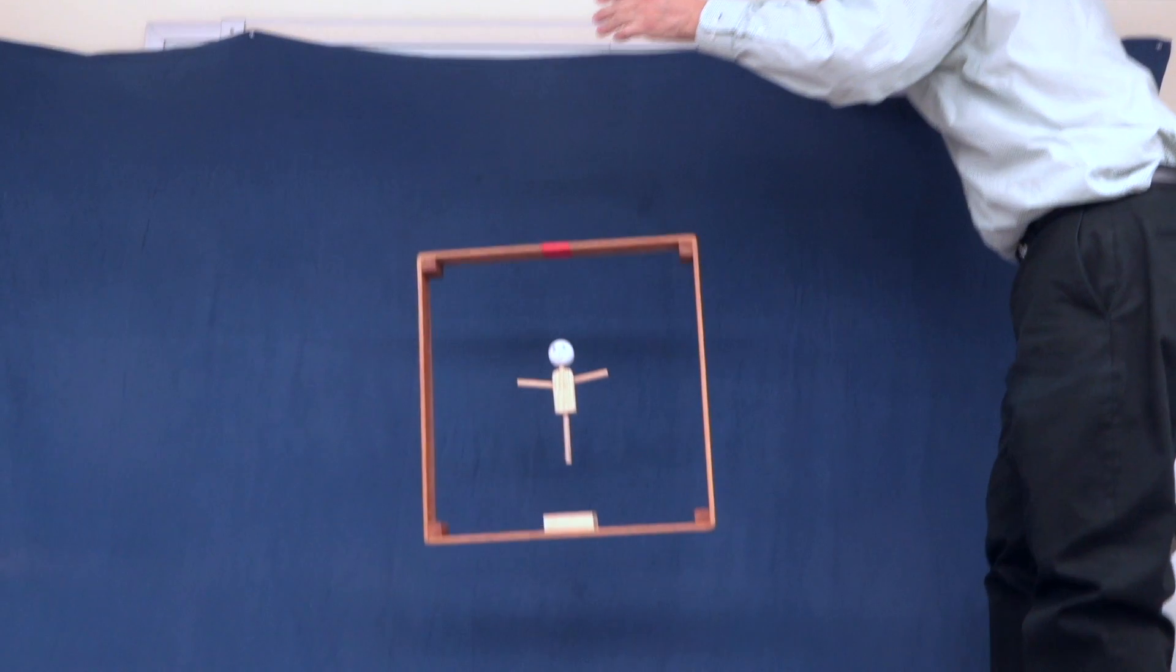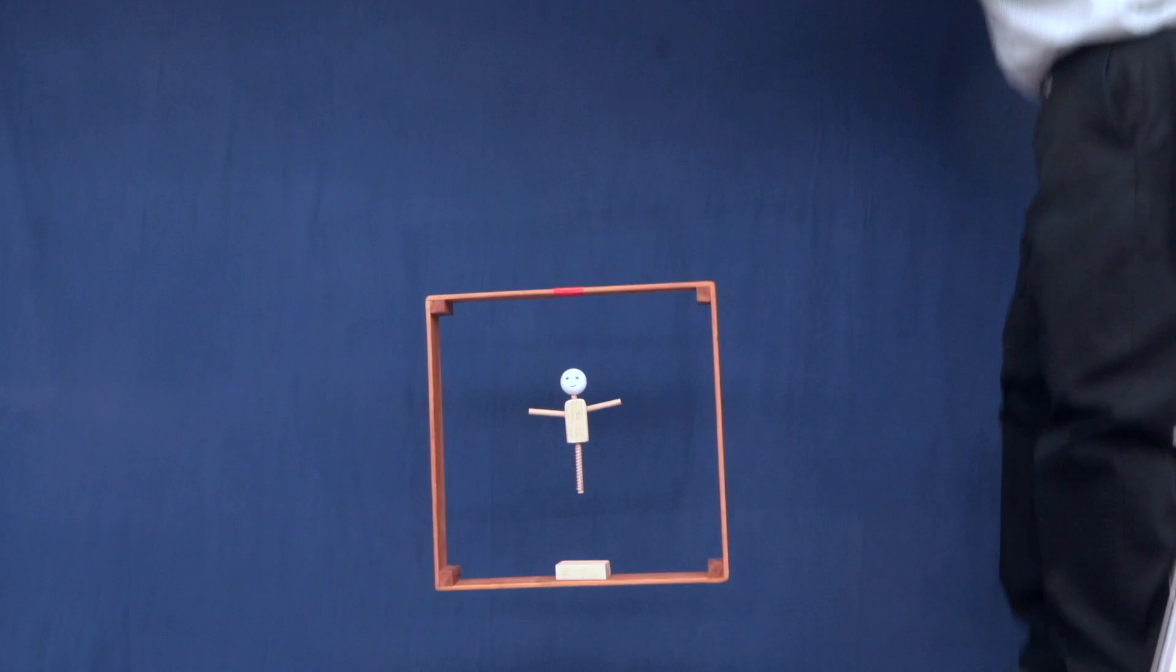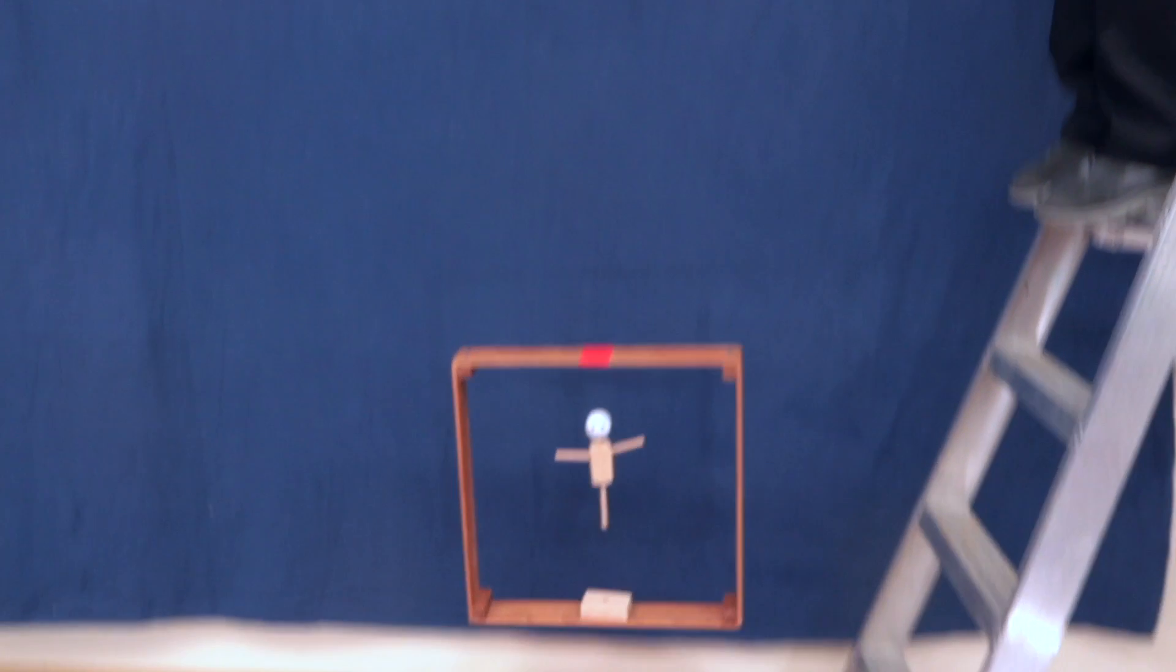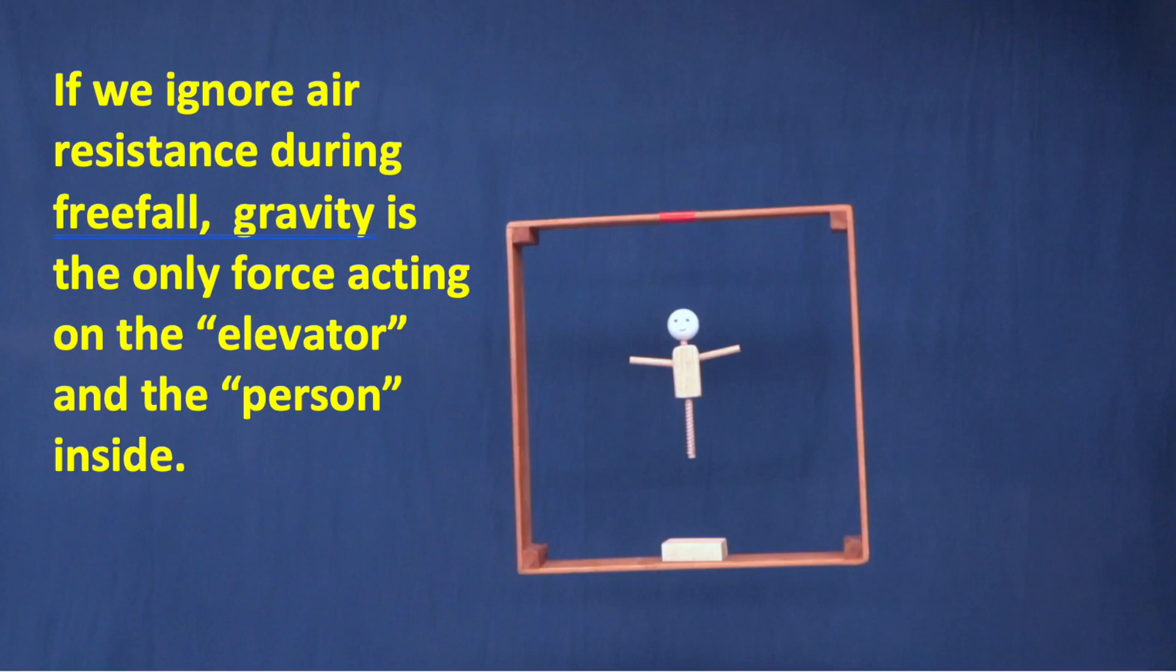Now let's take a look at why he stays in the center. If we can ignore the air resistance, gravity is the only force acting on both the elevator and the person that's falling inside of it.